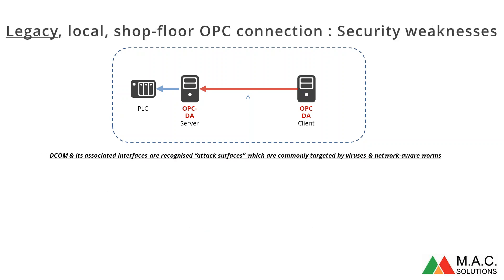DCOM, as you may expect, allows one computer to interact with another computer across the network using Windows authentication. DCOM authentication is a known attack surface because DCOM is not an industrial-specific thing — it's in the heart of Windows security. So if you're a virus writer or you're trying to create malware or worms that spread themselves across a network, you're going to be using DCOM as one of your first attack surfaces — to find holes, especially in legacy builds of Windows, and exploit those holes to spread the malware and viruses.